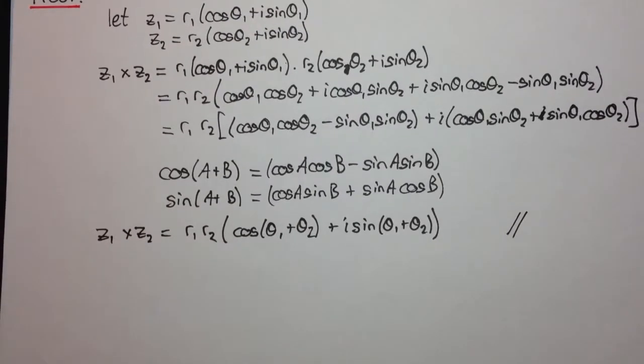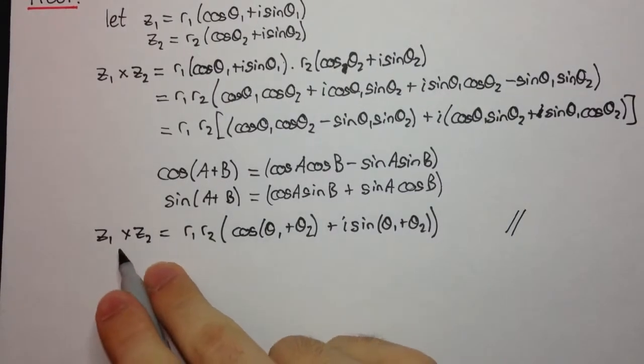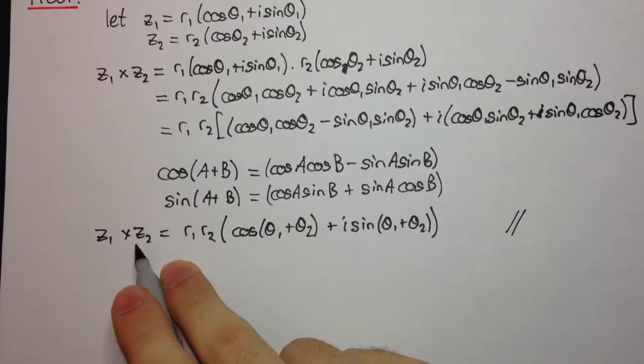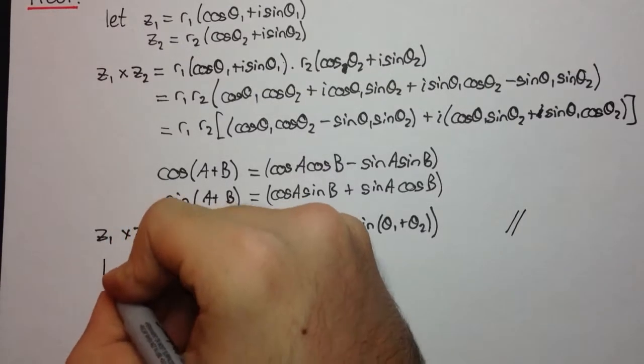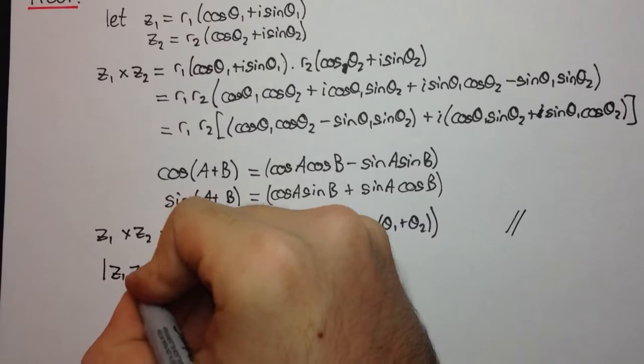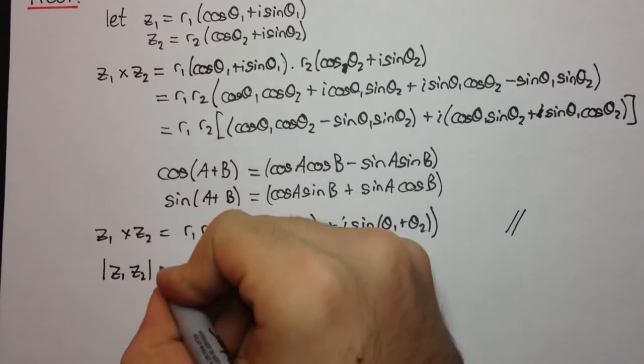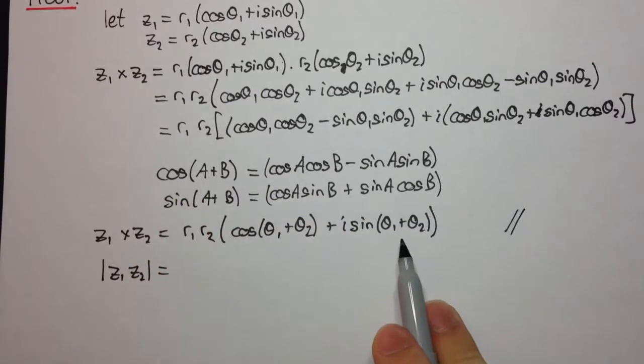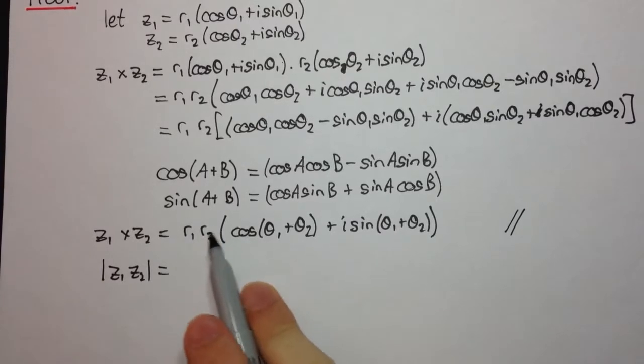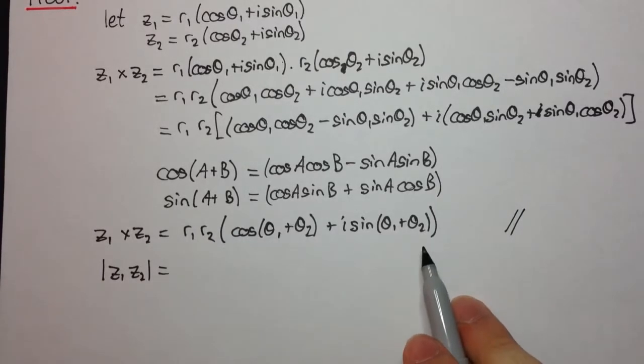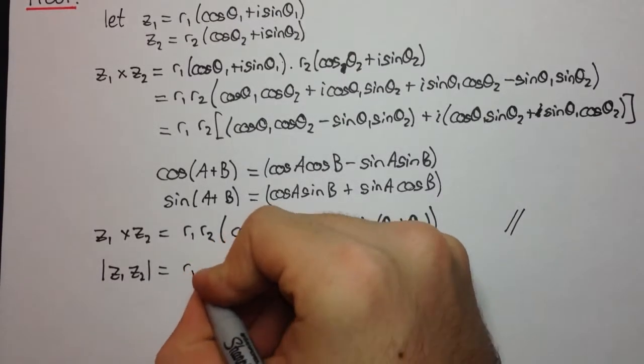Okay, now before I go on and have a look at the second identity, there's a few things we should note from this. If we have a look at the complex number here, let's have a look at the modulus of the complex number. So z1 z2, and we have a look at the modulus. Well, since this is in mod arg form, it's just the coefficient of this cos plus i sine. So the modulus is r1 r2.